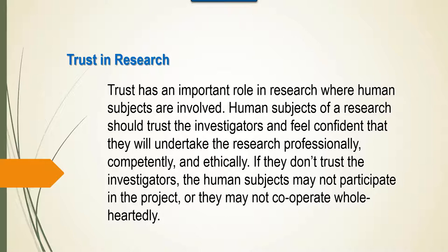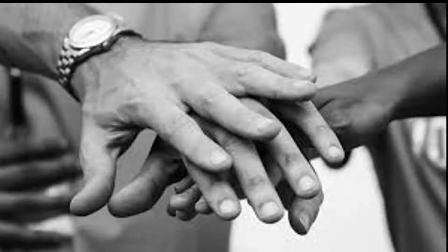Trust has an important role in research where human subjects are involved. Human subjects of a research should trust the investigators and feel confident that they will undertake the research professionally, competently and ethically. If they don't trust the investigators, the human subjects may not participate in the project or they may not cooperate well wholeheartedly. The investigators also should trust the human subjects and explain to them the details of the project. The trustworthiness of the institutes and the organizations involved in research is a major factor influencing the human subjects. The investigators involved in a research should trust each other and behave professionally, competently and ethically. From these, it can be seen that trust forms a foundation for the ethics of research with human subjects.